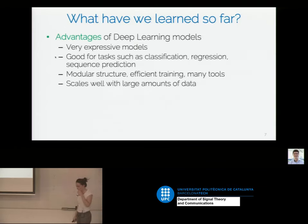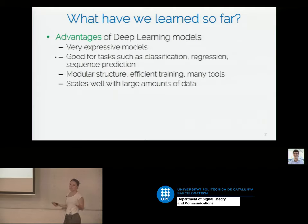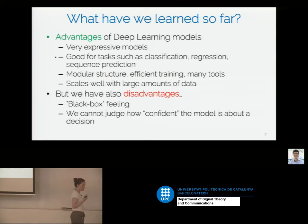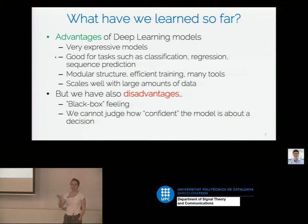We know from many lectures and successes in deep learning that these models are very expressive. We can do classification, regression, deal with sequences, do similarity prediction, and nowadays we have many tools so they're easy to implement and we can train with large amounts of data. But they do have some disadvantages — the famous 'black box' feeling — and most importantly, you have no idea how confident your neural network is when it gives you a decision. When it tells you that this pixel belongs to a car or a tree, you don't know if it's really sure or only halfway sure, and we'd like to have a measure of this confidence.